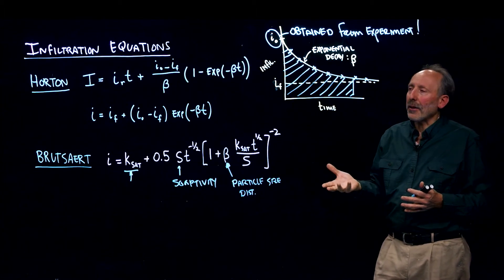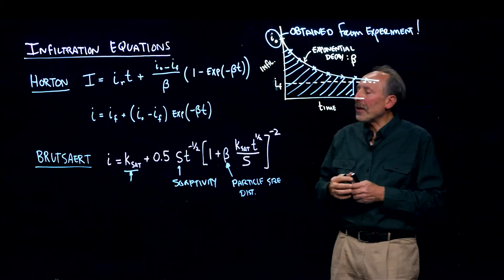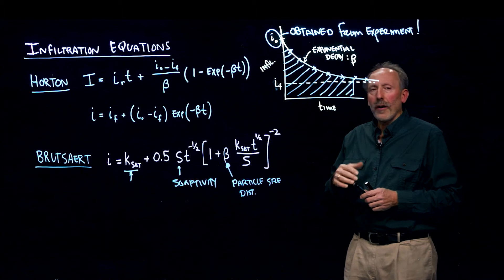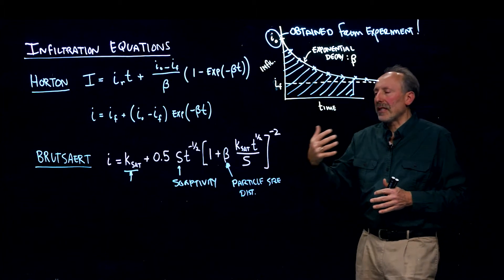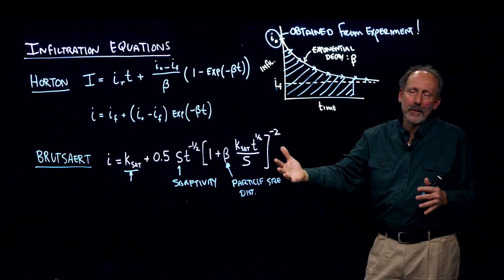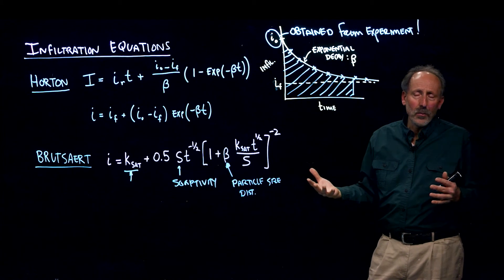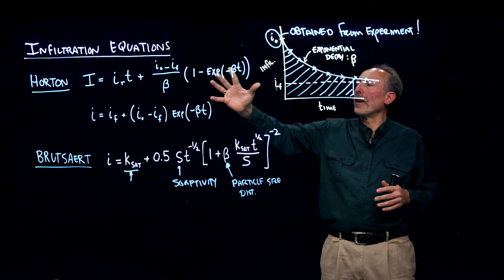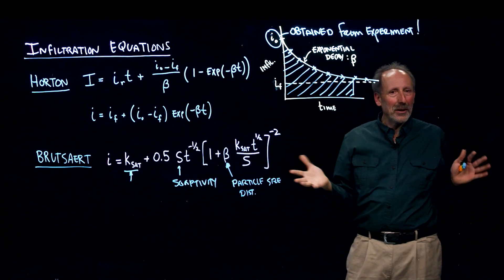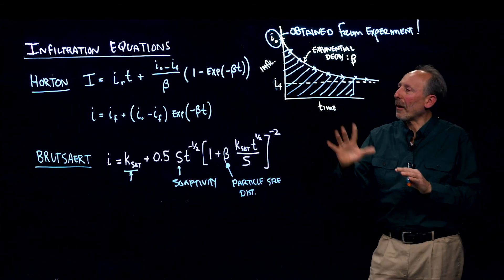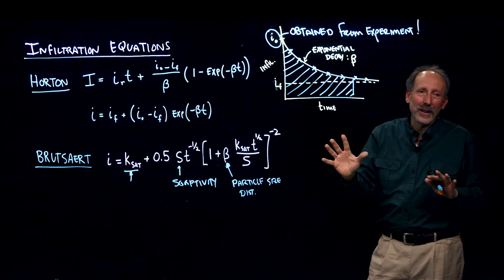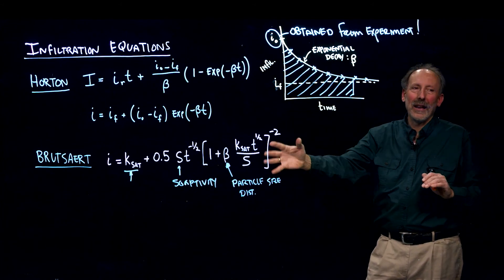Each of them can be quite accurate, but the predictive qualities of a physically-based equation are far greater in terms of being able to say what would happen if, for example, the soil was initially moist or other conditions were changing. Then we can make predictions here, where here we have to repeat our measurements empirically to get a new result. So I want to make the emphasis here that infiltration equations come in two quite different flavors, empirical and physically-based.